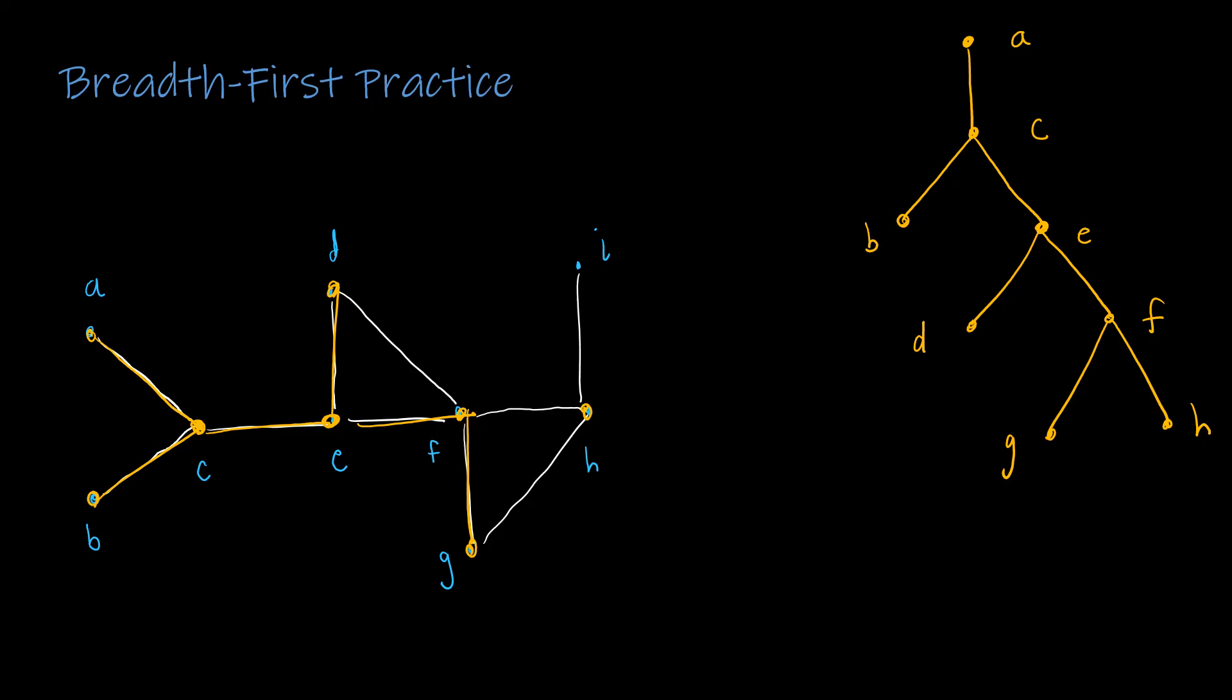G can only connect to H, which has already been visited. So H will connect to I. And that is my spanning tree.